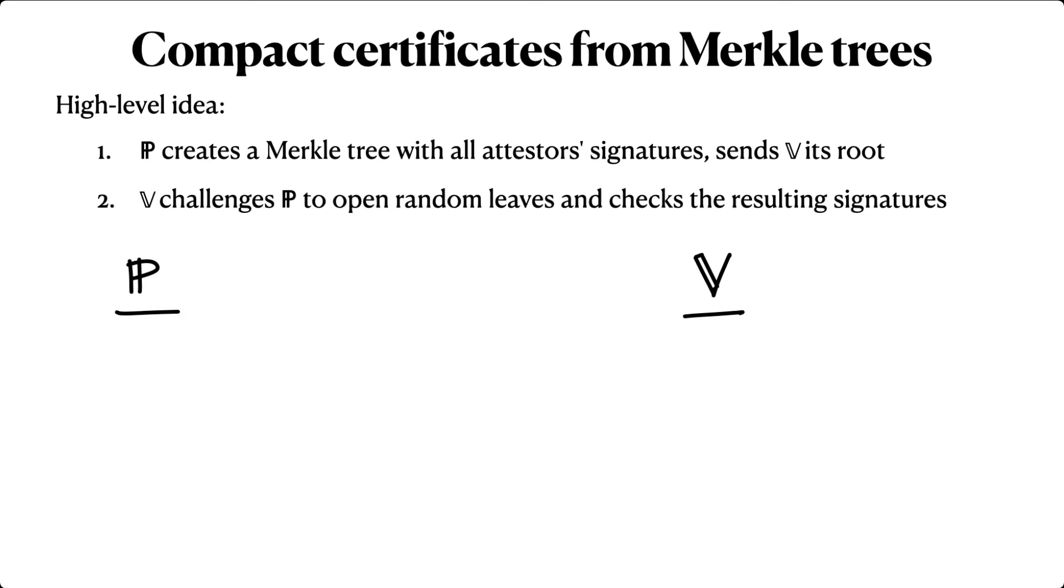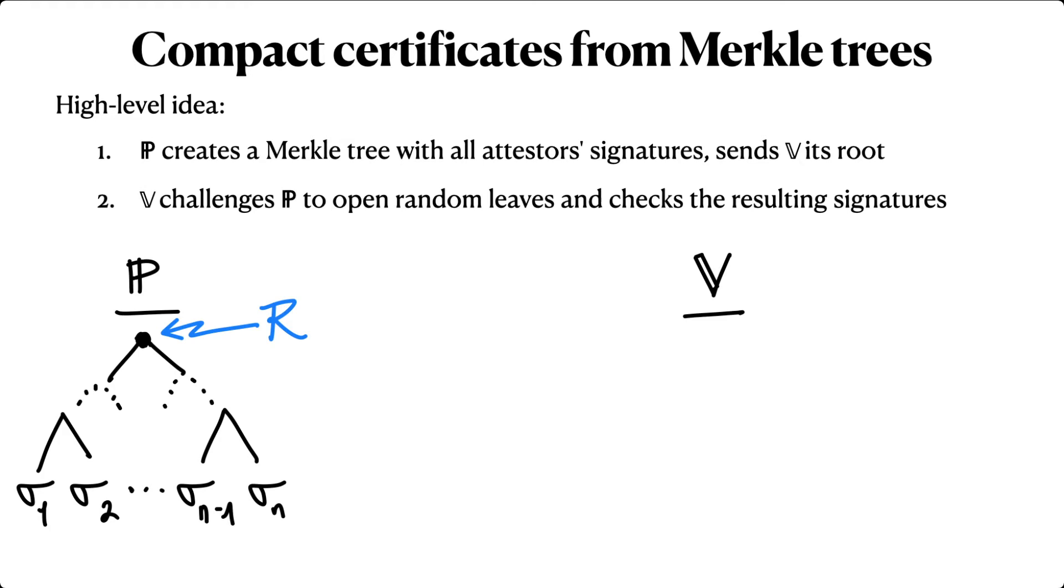Then the verifier challenges the prover to reveal a few random signatures, and it checks those. Pictorially, the prover starts with some signatures and constructs the signature Merkle tree, whose root is capital R. It sends R to the verifier, who chooses a set of challenges and sends them to the prover.